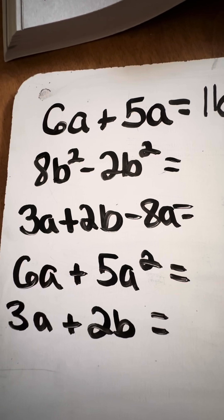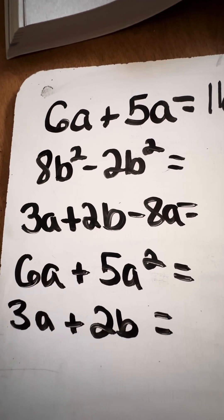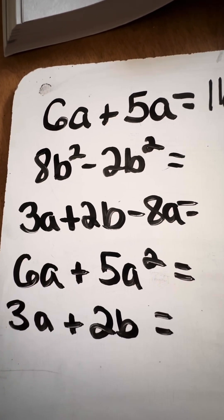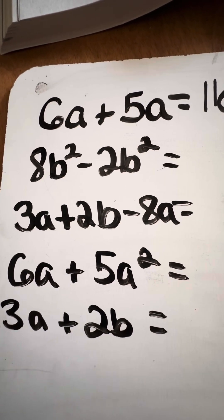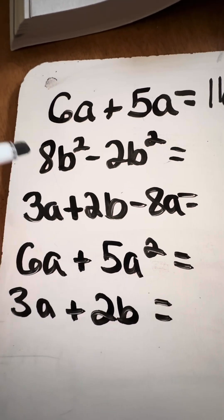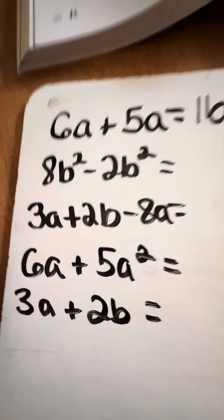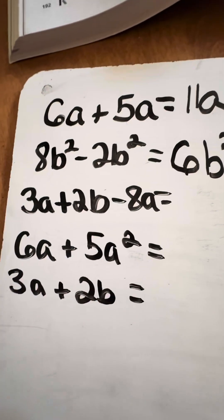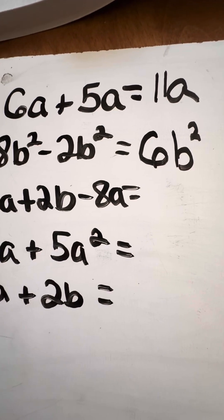Look at the next one. We have another binomial — two sets of terms. We have 8b squared minus 2b squared. Because they are both b squared, we are able to combine them. We combine our coefficients: 8 minus 2 gives us 6. Since there are 6 of the b squareds, this is going to be 6b squared. That would be your finalized simplification of combining like terms.